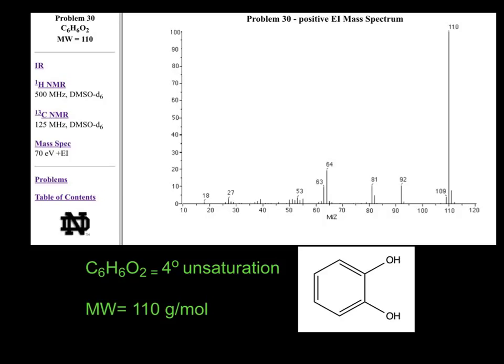The first thing you want to look at when given a molecular formula is degrees of unsaturation. Given the formula C6H6O2, we find four degrees of unsaturation. When we see six carbons and four degrees of unsaturation in a molecular formula, we immediately want to think of a benzene ring because they are so commonly found in nature.